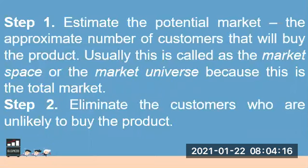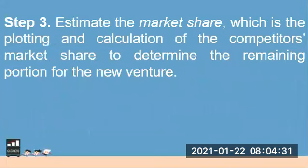There are several steps on how we can identify or determine the market size. The first one is to estimate the potential market — the approximate number of customers that will buy the product, also called the market space or market universe. Then for step two, we eliminate the customers who are unlikely to buy the products, to identify our possible target customers. For step three, we estimate our market share — the plotting and calculation of the competitors' market share to determine the remaining opportunity for the new venture.